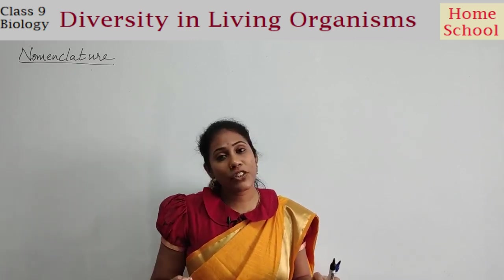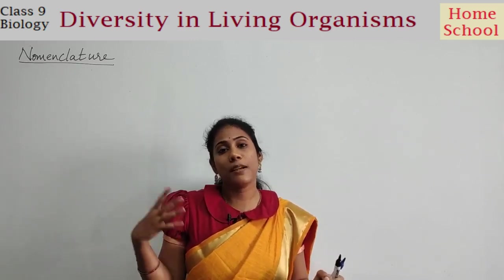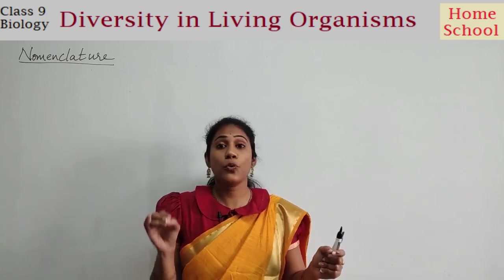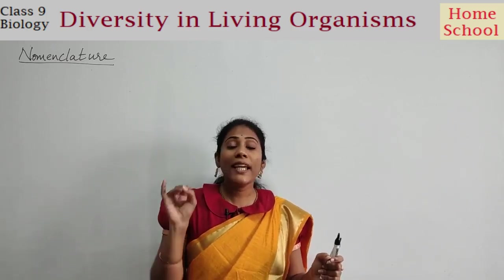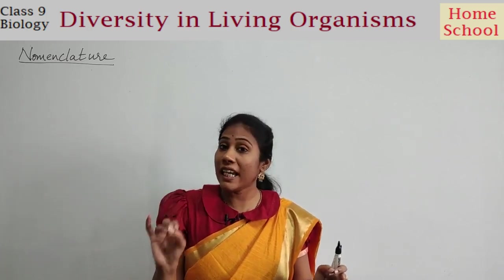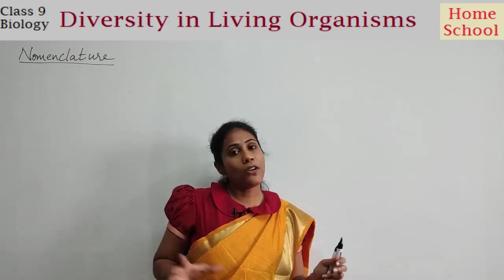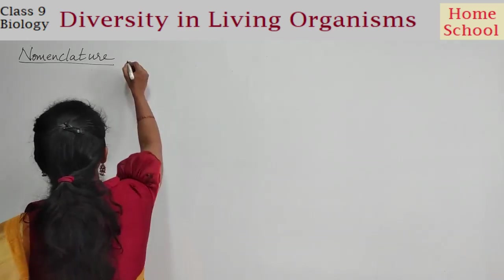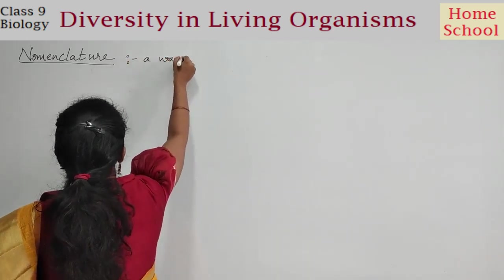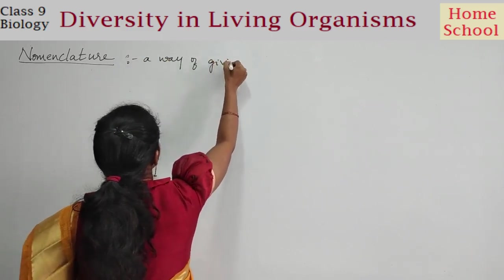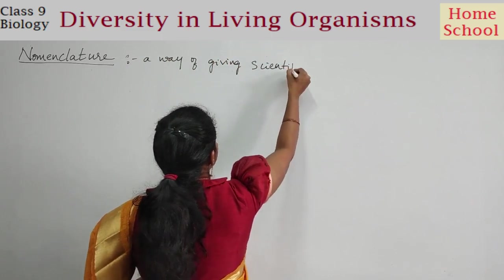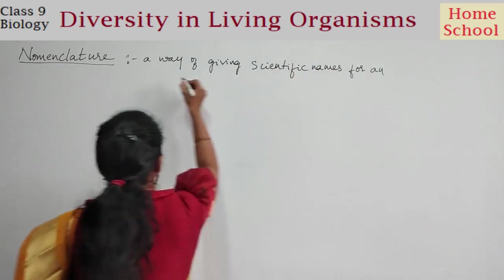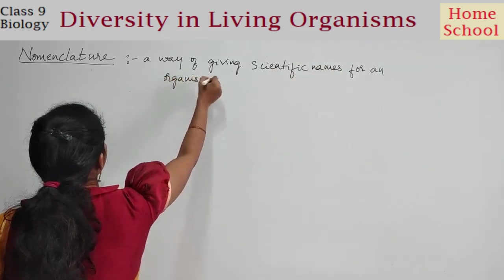What do we mean by nomenclature? It is very simple. Nomenclature is a process using certain rules created by botanical and zoological organizations for giving scientific names to organisms. Such a process is called nomenclature — it is a way of giving scientific names to an organism.